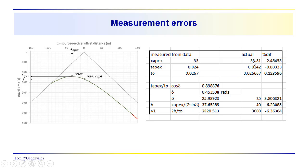These were the actual in the forward model that I used to calculate the response here. We got 33.81, 0.0242, 0.0266667. So this was pretty close here. Percent difference about minus 2.2 and a half, close to minus 1, just a little bit over, just a small error there.